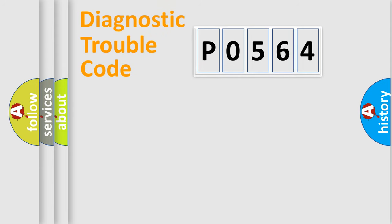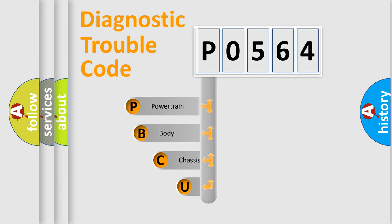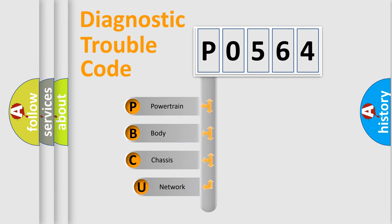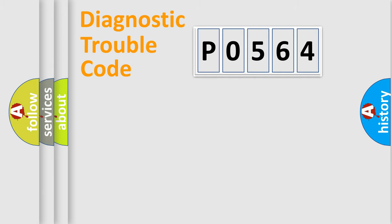Let's do this. First, let's look at the history of diagnostic fault code composition according to the OBD2 protocol, which is unified for all automakers since 2000. We divide the electric system of an automobile into four basic units: Powertrain, Body, Chassis, and Network.